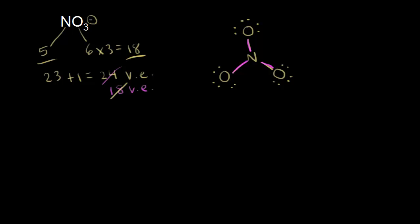This dot structure has all of our valence electrons. Oxygen has an octet, so oxygen is happy. But nitrogen does not have an octet — there are only six electrons around the nitrogen, and nitrogen wants to get to an octet. There are a couple of different ways we could give nitrogen an octet. For example, we could take a lone pair of electrons from the top oxygen and move them in to share those electrons between the top oxygen and the nitrogen. Let's go ahead and draw the resulting dot structure.